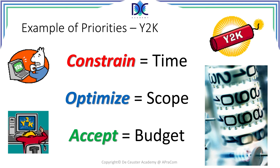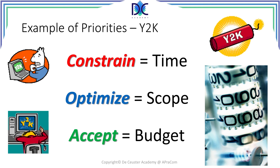The second parameter was to optimize the scope. Distinctions were made between very important items to correct and small things that could be neglected, but the main things had to be resolved. The last parameter — budget — was accepted. A lot of money was spent, and many people say it was too expensive, but nobody would take the risk to go back to the old programs. A similar project was the introduction of the Euro, where everything had to start on January 1st, the first minute after midnight, with all ATMs across the entire Eurozone switching to Euro. It was also a very complex project with the same time constraint.